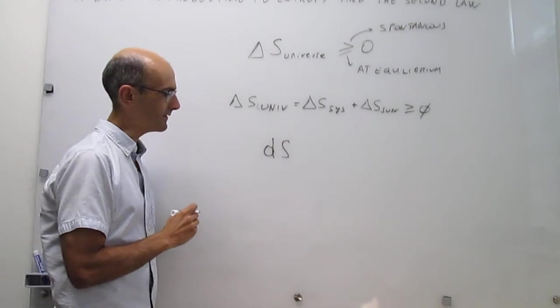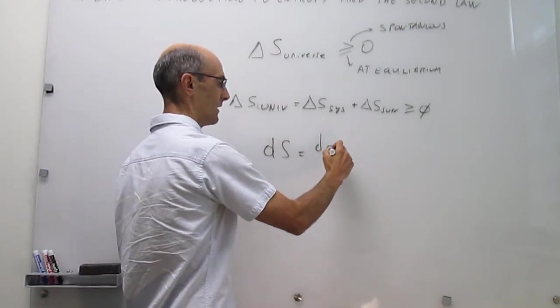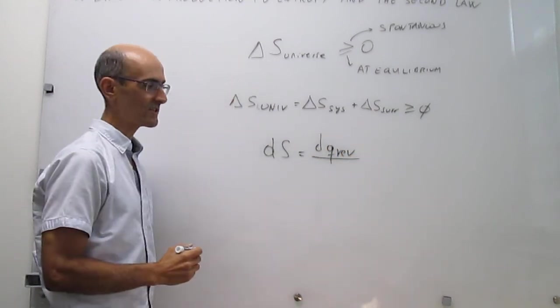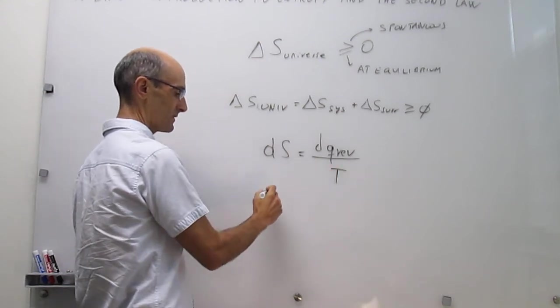In differential form, the differential of entropy is simply going to be equal to the differential in reversible heat divided over temperature. So the change in entropy, either in the system or in the surroundings,